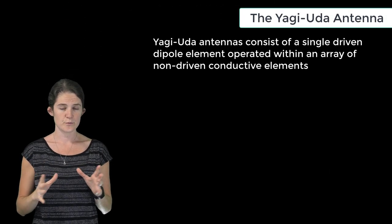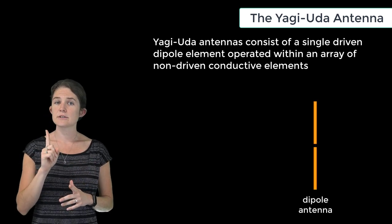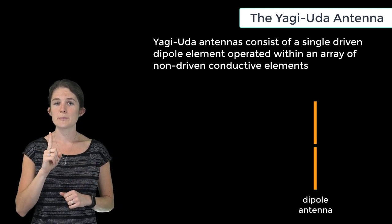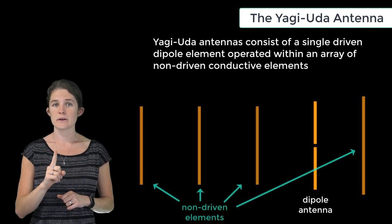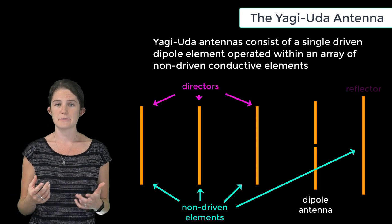Yagi-Uda antennas, which are sometimes just called Yagi antennas, consist of a single dipole antenna which is operated within an array of other non-driven linear conductive elements, which are known as directors and reflectors.